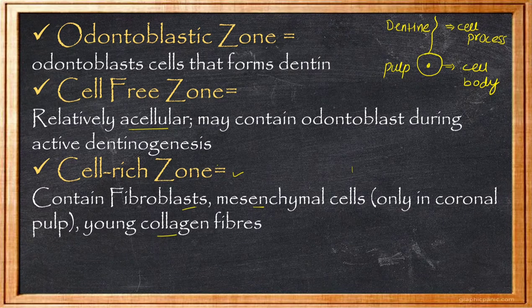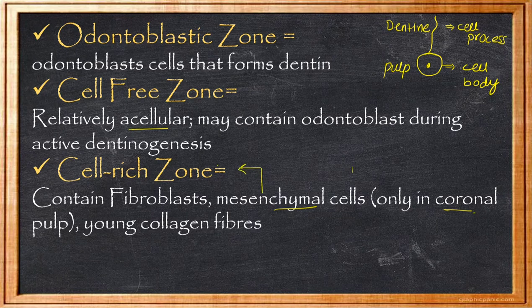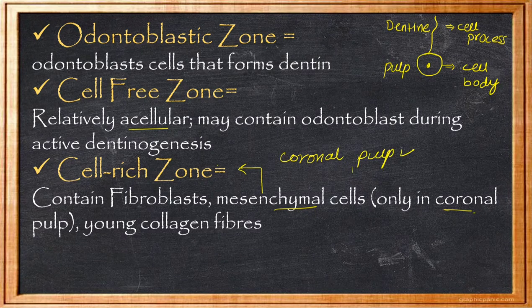An important point to remember: Mesenchymal cells in the cell-rich zone are present only in the Coronal Pulp — that means only in the pulp present in the crown. They are not present in the Radicular Pulp. Do remember this distinction.